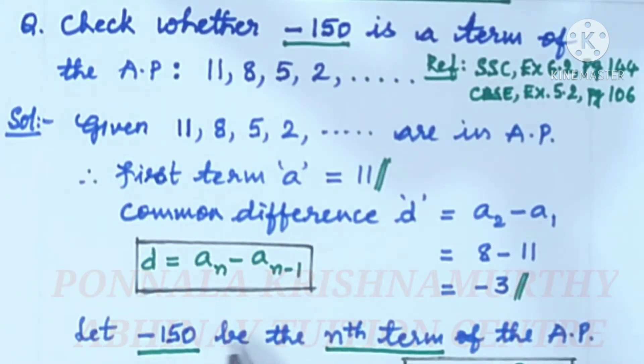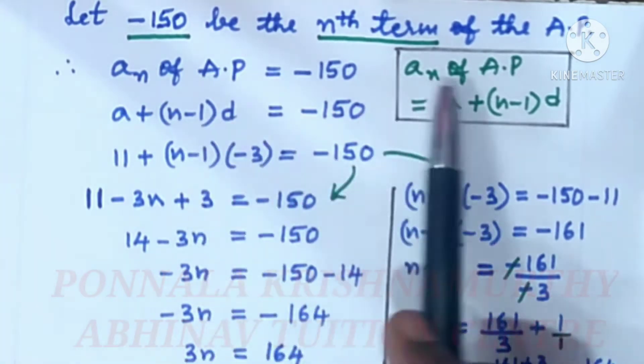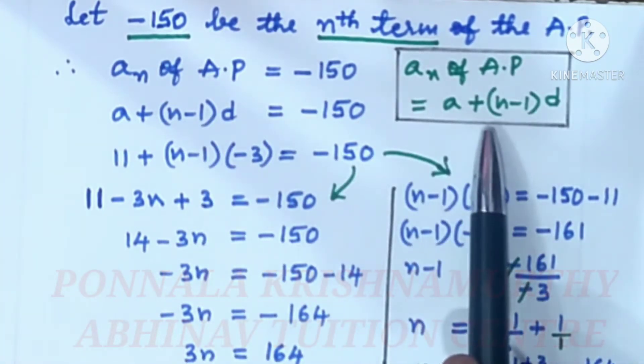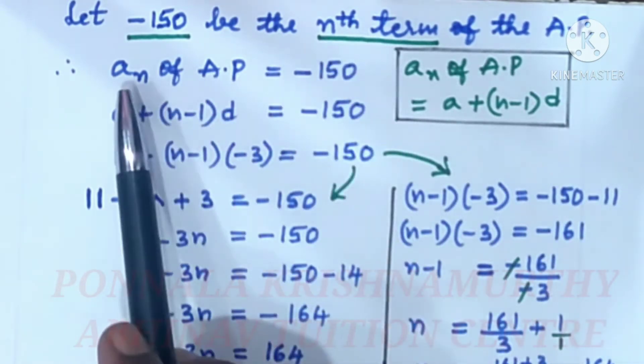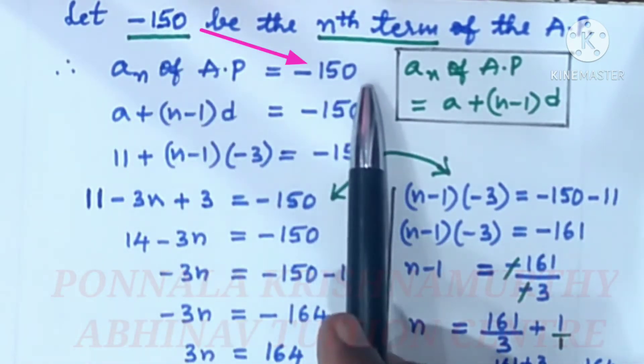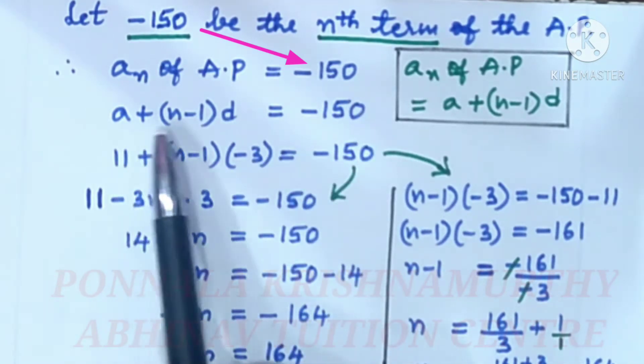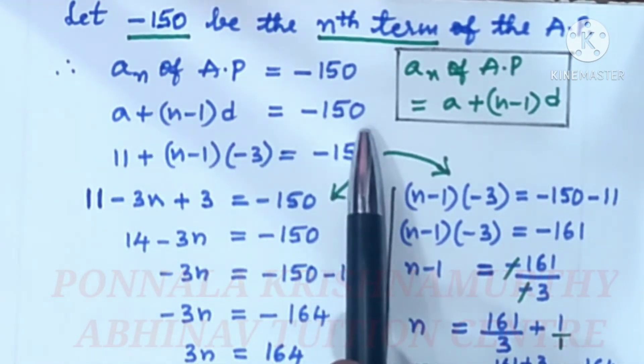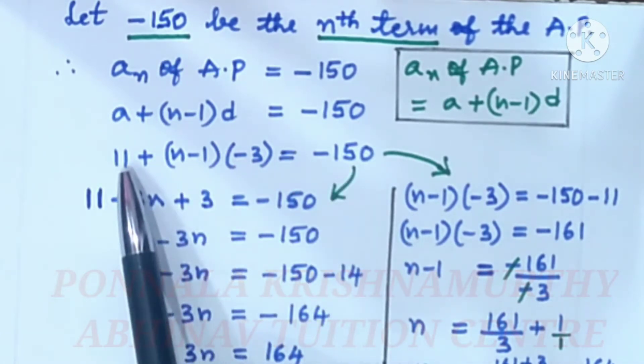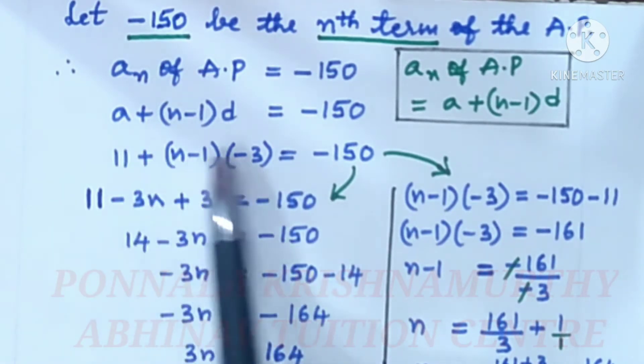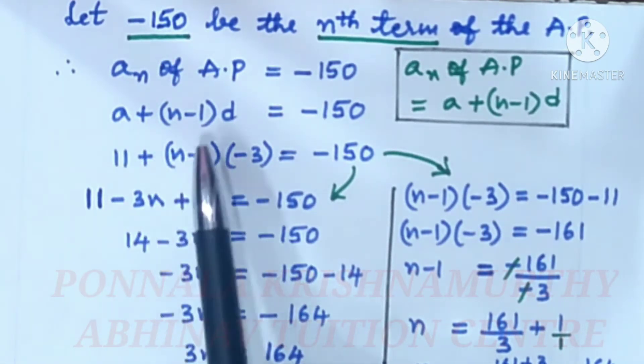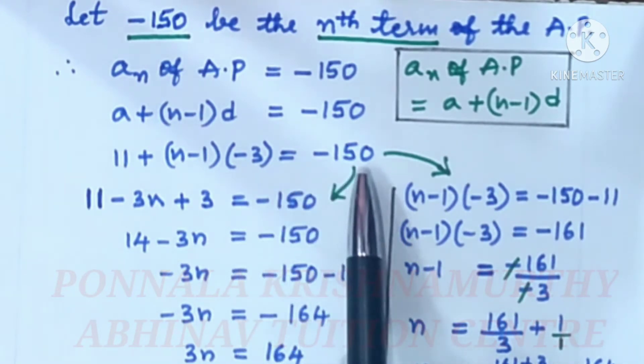Let minus 150 be the nth term of the AP. an of AP is equal to a plus n minus 1 into d is the formula. Then nth term is an of AP, that is equal to minus 150. So, a plus n minus 1 into d is equal to minus 150.